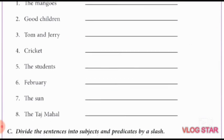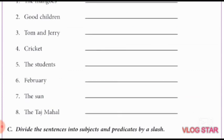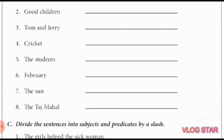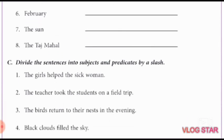February. February is the subject. February is the shortest month of the year. Now it is complete. The sun. The sun shines brightly. The Taj Mahal. The Taj Mahal is an old monument. Now exercise number C. Divide the sentence into subjects and predicate by a slash.